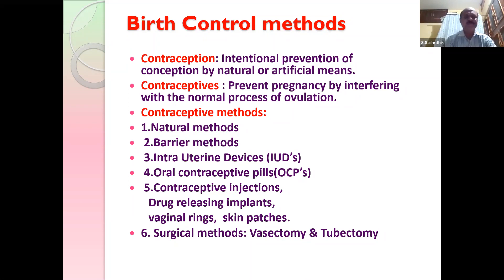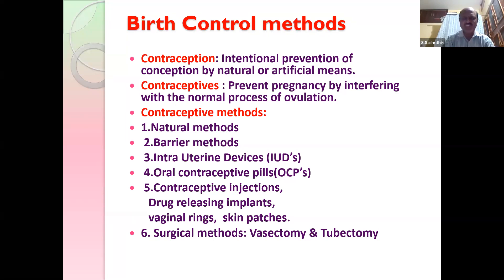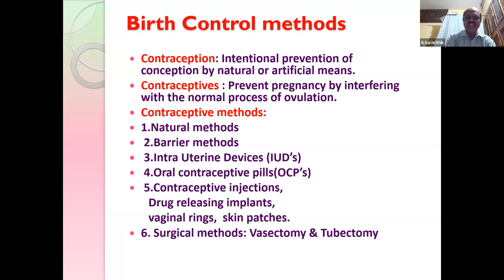Contraception means intentional prevention of conception by natural or artificial means. Contraceptives prevent pregnancy by interfering with the normal process of ovulation. There are seven types of contraceptive methods: natural methods, barrier methods, intra-uterine devices (IUDs), oral contraceptive pills (OCPs), contraceptive injections, drug-releasing implants, vaginal rings, skin patches, and surgical methods — vasectomy and tubectomy.